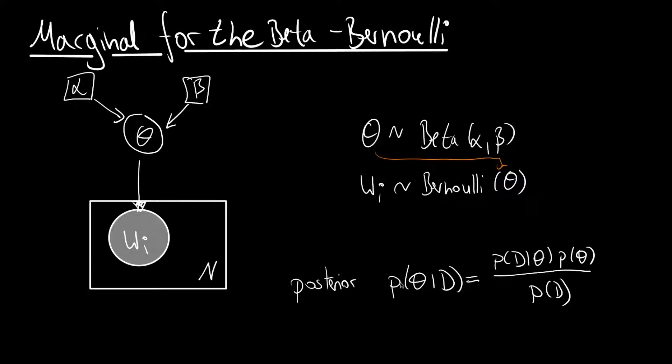When we derived the posterior, we applied Bayes' rule in order to change the order in the condition, and we get P of theta given D as P of D given theta times P of theta divided by P of D.